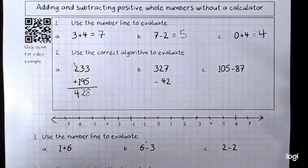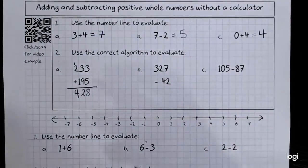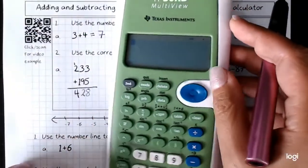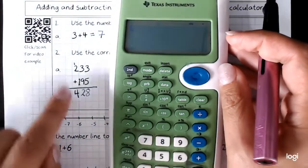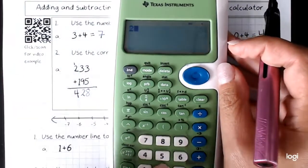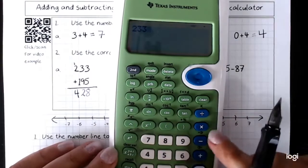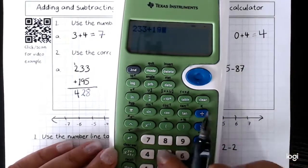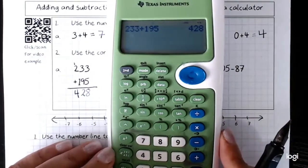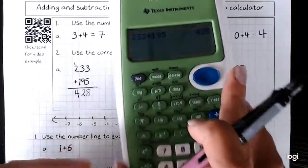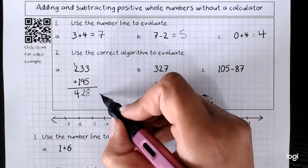There's a couple of ways that we can check our answer. Remember you can always check with a calculator, even if you've done the working. 233 plus 195, 428. So that's good. It means I don't need to check my answers. I've done it correctly.